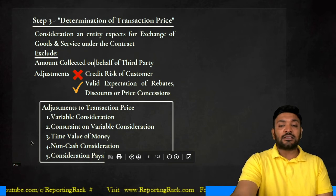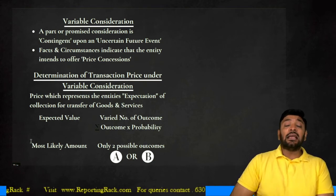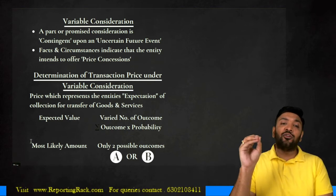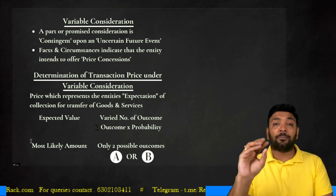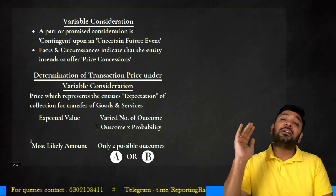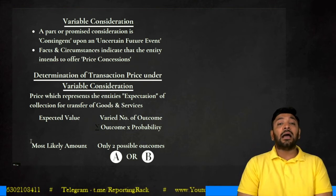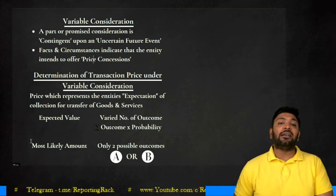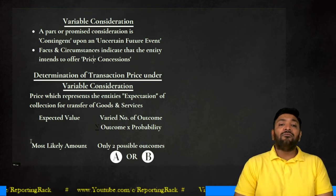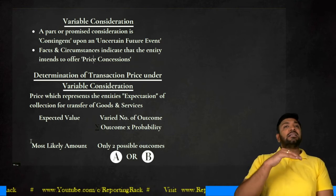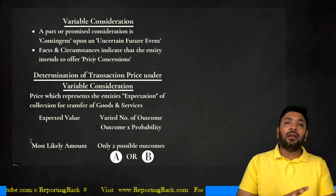Moving on, the first adjustment — variable consideration — is where part of the promised consideration is dependent or contingent upon an uncertain future event. For example: if the project is completed within 15 months, a bonus of 10 percent is receivable; if completed after 18 months, a penalty of 10 percent reduces the transaction price. This is a part of the consideration that is contingent upon an uncertain future event. Sometimes the facts and circumstances indicate that the entity intends to offer a price concession. If completed within 18 months the consideration is 100, within 15 months it is 110, and after 24 months it is 90.